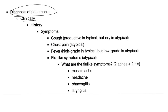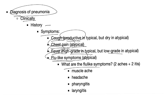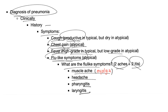Diagnosis of pneumonia involves history of contact with sick patients and symptoms. Cough — usually productive. Chest pain, which is common in typical pneumonia. Fever — high-grade in typical, low-grade in atypical. Flu-like symptoms: two aches and two -itis — muscle ache (myalgia) and headache, plus pharyngitis and laryngitis. By the way, myalgia: myo means muscle, alge means pain. That's also why we call medications analgesics — an means no, algesia means pain.